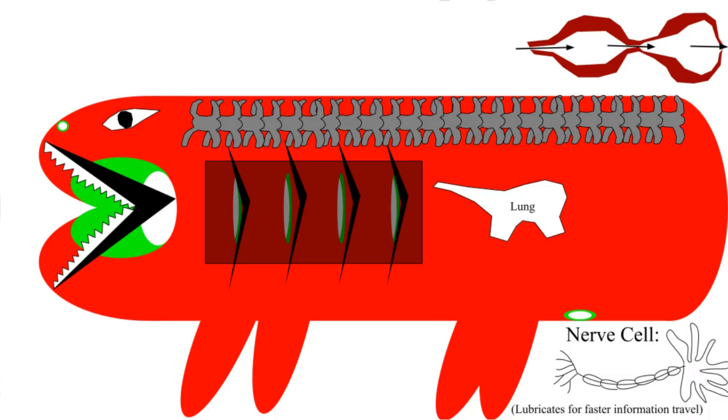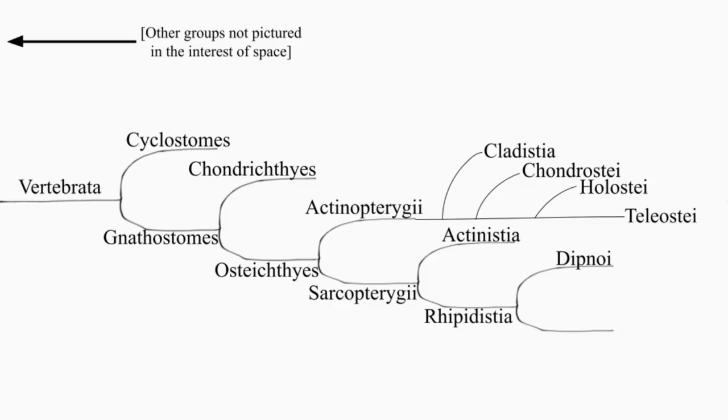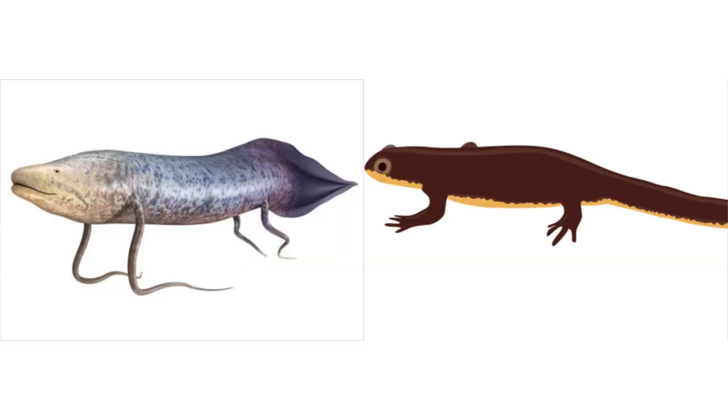and Ripidistia has lungs and enamel in the teeth. It also breaks up into double breathers and four legs. I think you can tell the difference between these two just by looking at them.